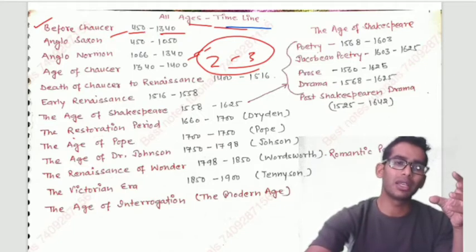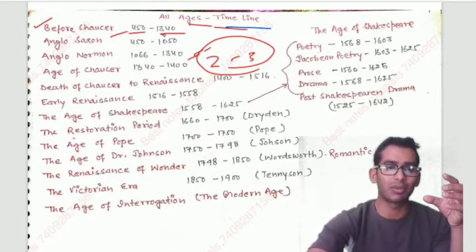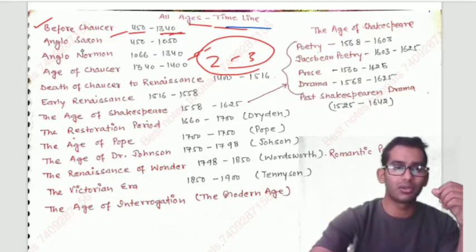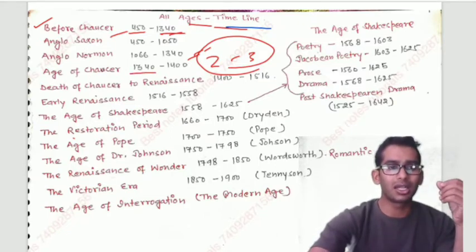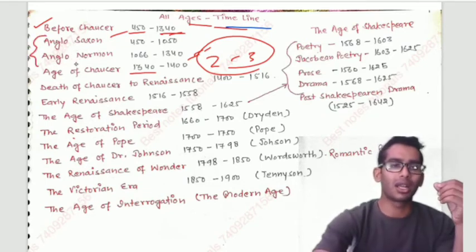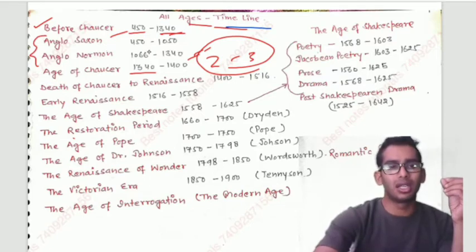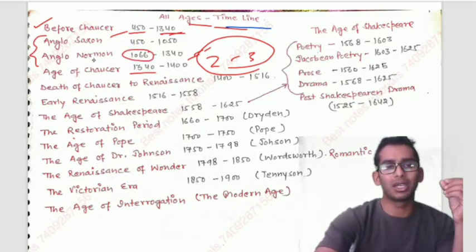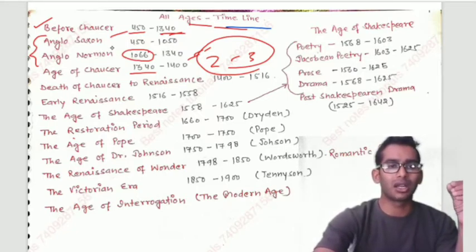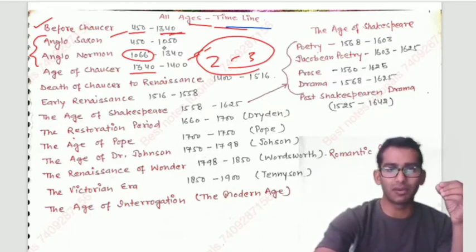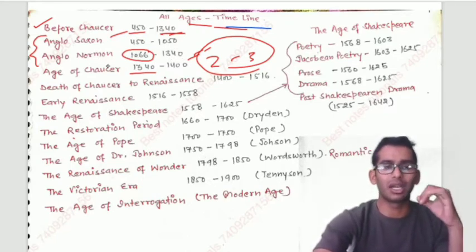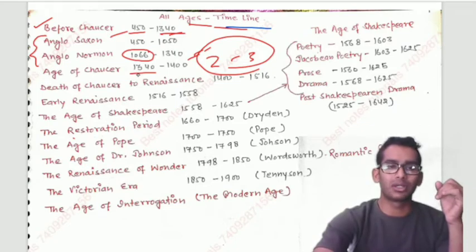Before Chaucer, the time period was 450 to 1340. Chaucer was born in 1340. This timeline is divided into two parts: the Anglo-Saxon period and the Anglo-Norman period. The dividing point is 1066, when the Norman Conquest happened. Anglo-Saxon is from 450 to 1066, and Anglo-Norman is from 1066 to 1340.